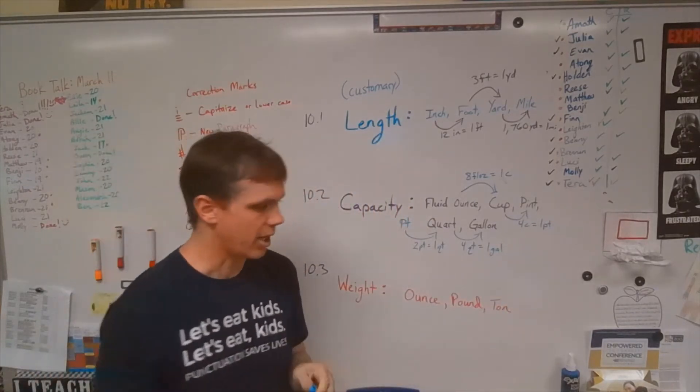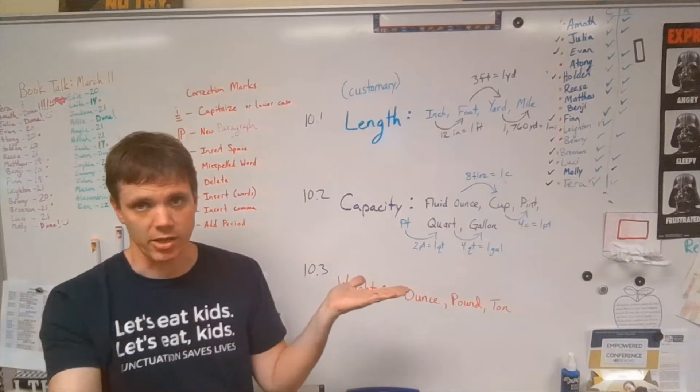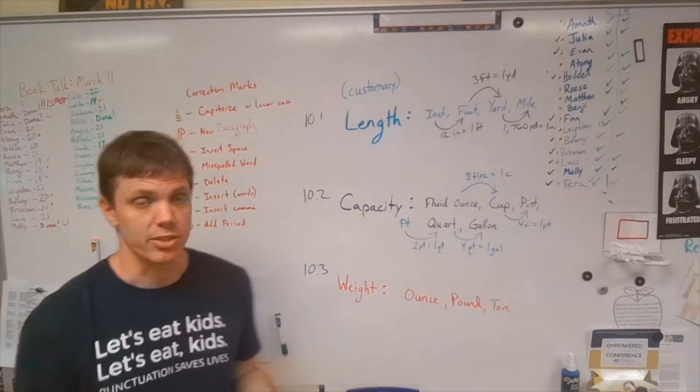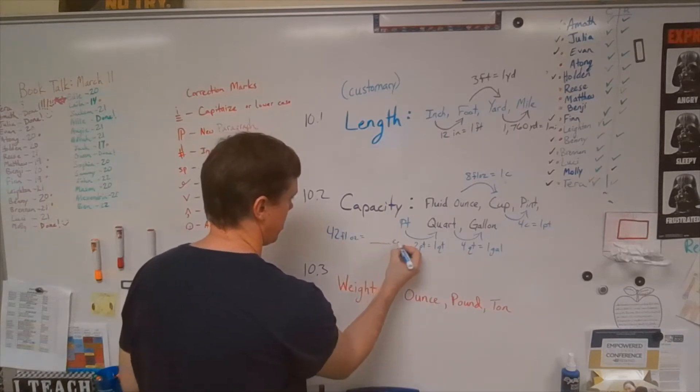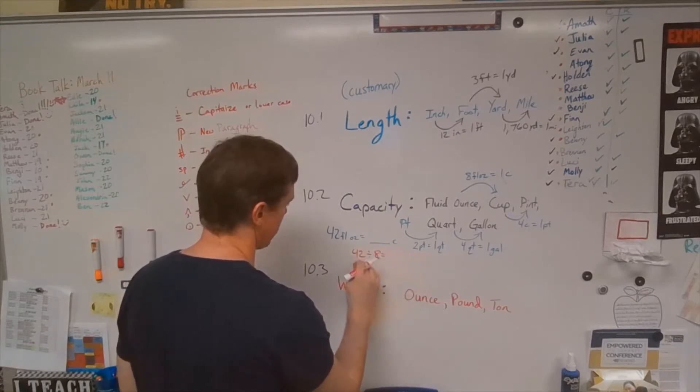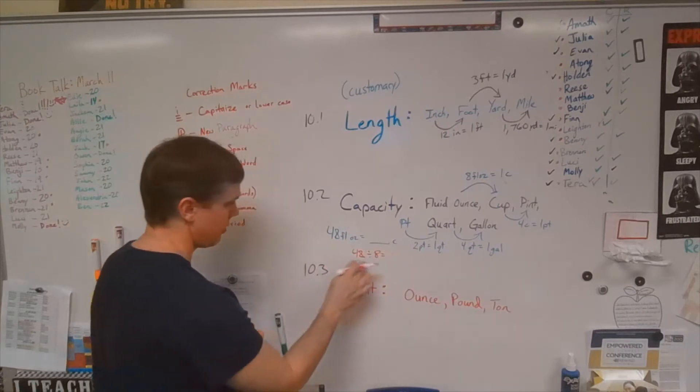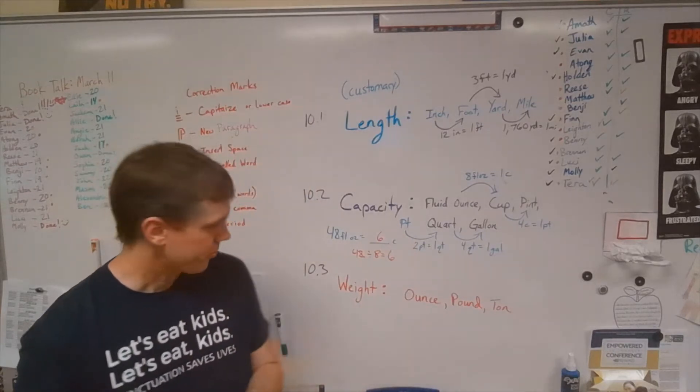So again, this is just how you convert between them. So kind of like before it's going to give you, here's this thing, how many, you know, here's you have, say 42 fluid ounces. How many cups do you have? And so you'll just say, okay, well, I've got 42. And that's going to equal some number of cups. And you're just going to divide 42 divided by eight, which is going to equal, oh, just kidding. Let's say 48, just because it works out pretty. Otherwise we're going to have a mess. So we've got 48 fluid ounces. 48 divided by eight gives you six. So you have six cups.